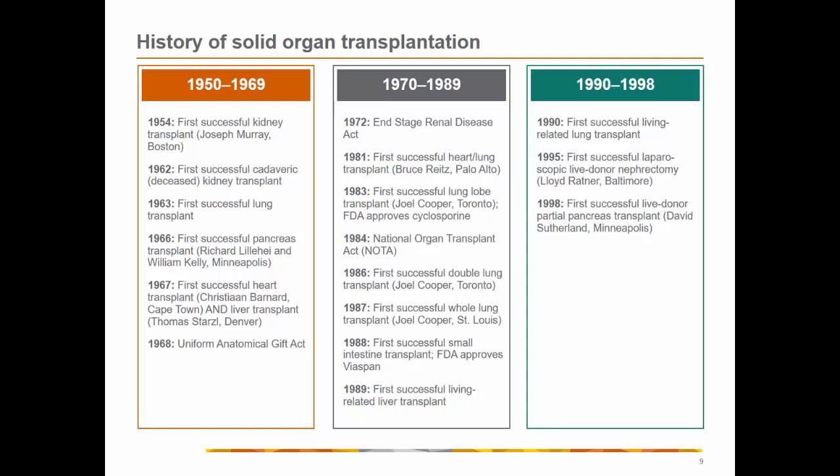There is a rich history of organ transplantation advances. The first initial one was in 1823 — the first skin autograft transplantation in Germany by Carl Bunger. A cornea transplant was performed in 1905. 1954 was the first successful kidney transplant. 1998 was the first successful live donor pancreas transplantation. In 2000, the first robotic donor nephrectomy for a living donor kidney transplant was performed in Illinois.